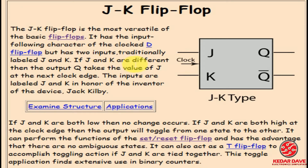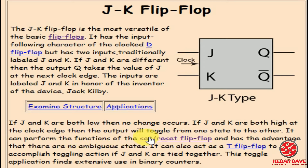The JK flip-flop has the input-following character of the D flip-flop but has two inputs, traditionally labeled J and K. If J and K are different, then the output Q takes the value of J at the next clock edge. If both inputs are low, then no change occurs. If J and K are both high at the clock edge, then the output will toggle from one state to the other.